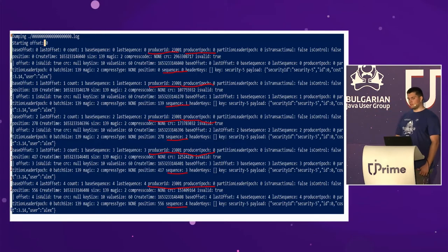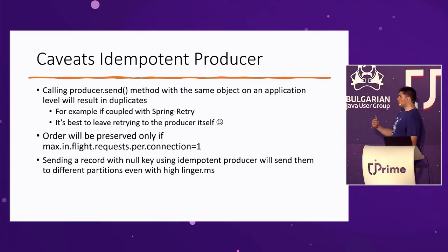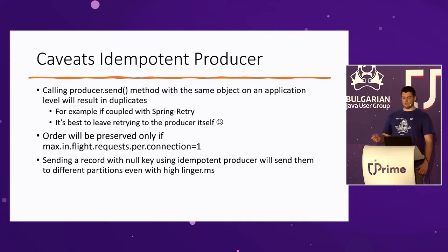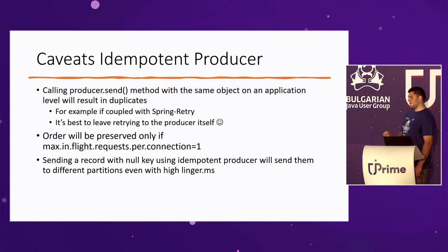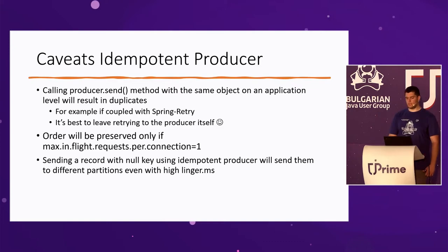Some quick caveats: leave the retrying to the producer itself. Do not retry at the application level — if you send and then send again the same Java object, you end up with duplicates. For example, Spring Retry is a common framework people use — don't do that. Leave the retrying to the idempotent producer. And if you want ordering, make sure you set max in-flight requests per connection to one, because otherwise records sent to the broker might arrive out of order.